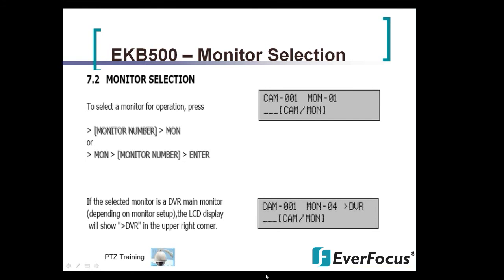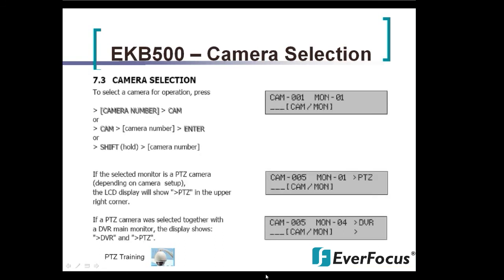This is a brief description of choosing different monitor selections. If you're using three different monitors or DVRs, you would hit the mon key, type the monitor number you're looking for, and then enter — that will pull up the particular DVR you want to work with, with all cameras listed as configured under the camera setting menu. If you select the monitor as a DVR main monitor, the LCD will show 'DVR' in the upper right-hand corner.